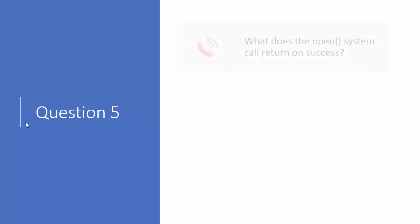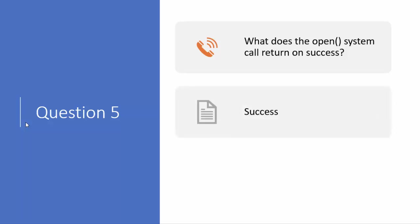Question number five: what does the open system call return on success? The open system call returns the file descriptor of the file. For all user-created files, remember the file descriptor value will always be greater than two. On failure, the open system call returns minus one.